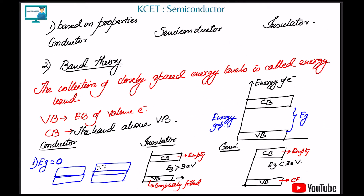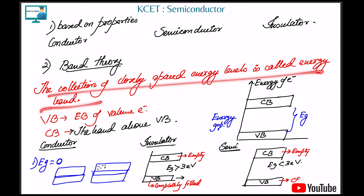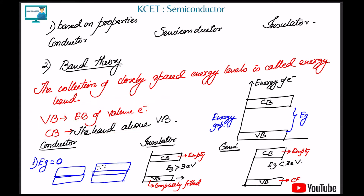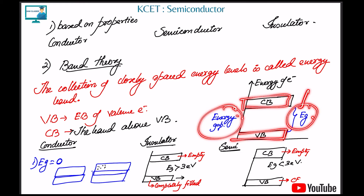Based on properties, we divide materials into conductor, semiconductor, and insulator. Now based on band theory — electrons interact with other electrons in the crystal and have their own energy levels. When we collect these energy levels we form a band. There are two major bands: the valence band, which is the energy band of valence electrons, and the conduction band above it. The gap between them is known as the energy band gap or forbidden gap.